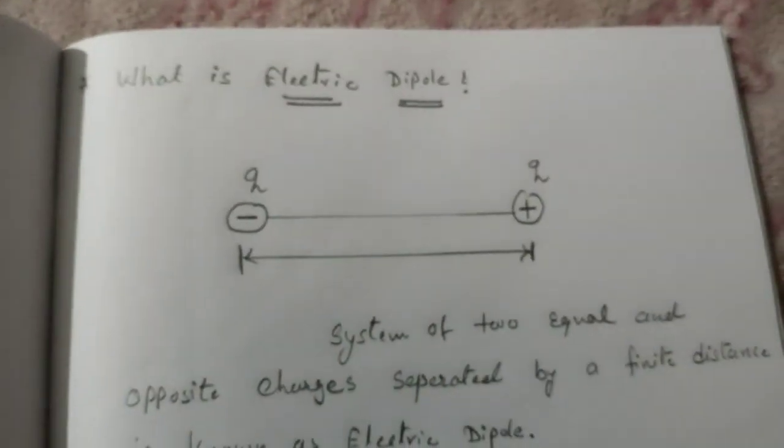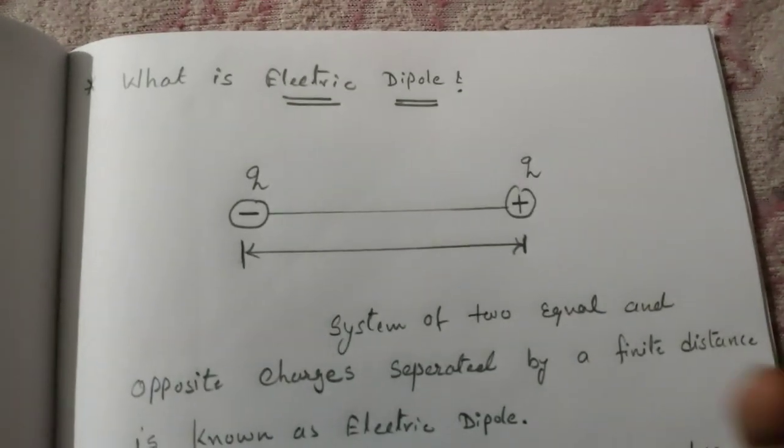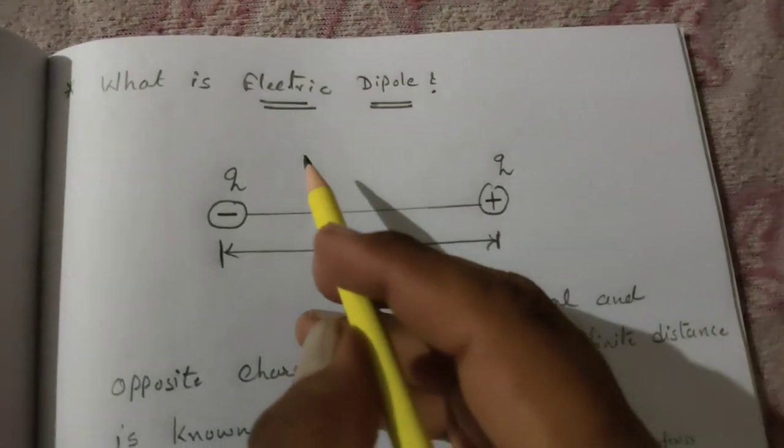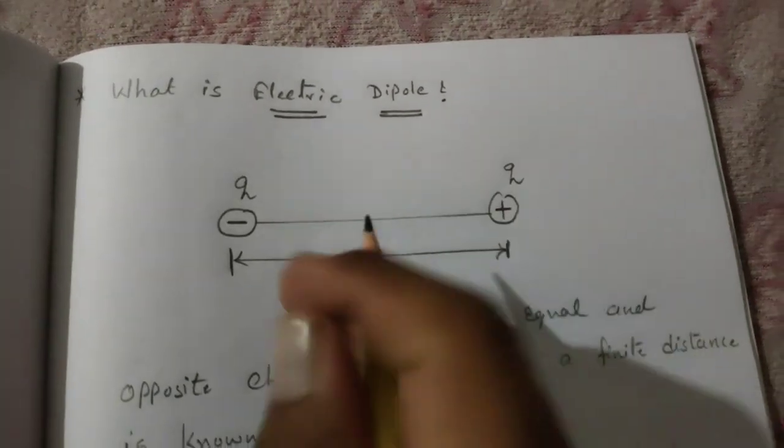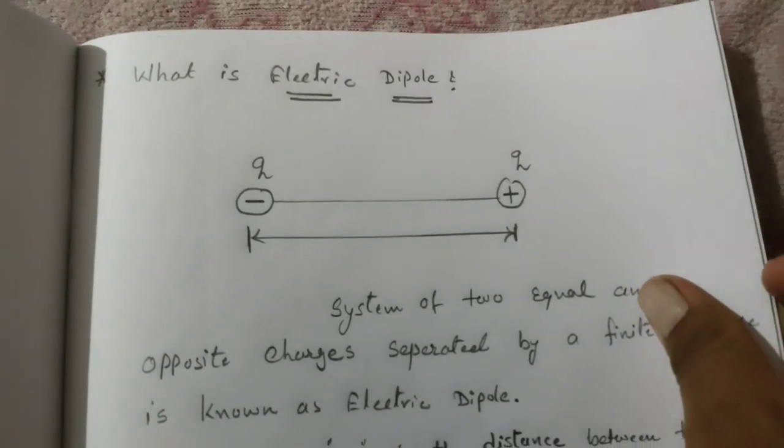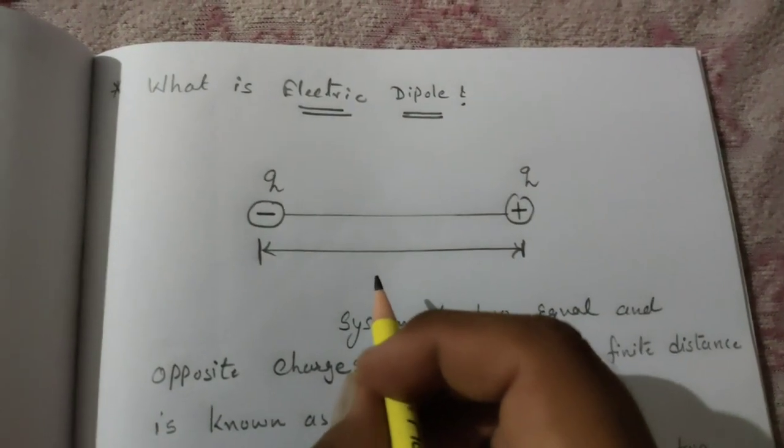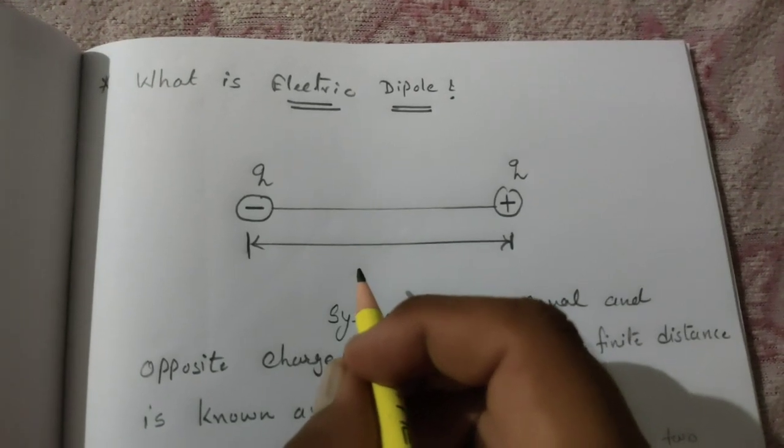Today we are going to study about another important topic of this chapter: electric dipole. How it works, what is the equation of electric dipole, and what is the basic definition of electric dipole - that we are going to see in this topic.